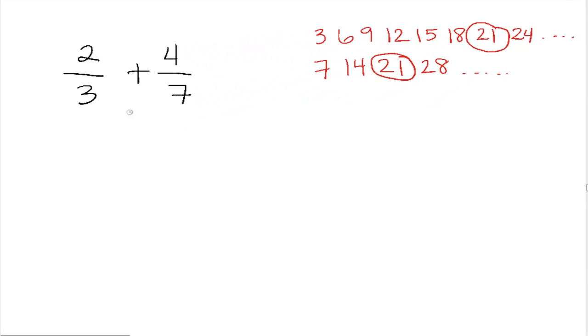So we need to make both these denominators a 21. In order to make a 3 21, we have to multiply it by 7. Now again, whenever you multiply the bottom of the fraction by something, you have to multiply the top of the fraction by the same thing. Now over on this fraction, in order to make this 7 a 21, I need to multiply it by a 3. And again, I'll multiply the top of that fraction by that same thing, another 3.